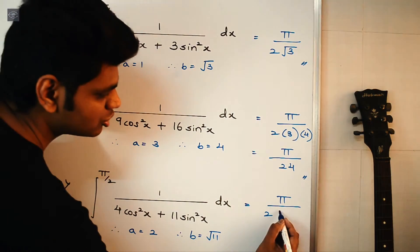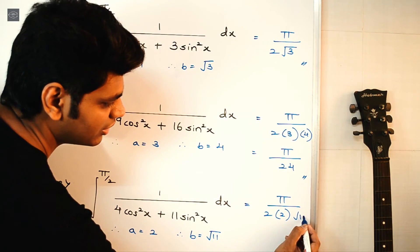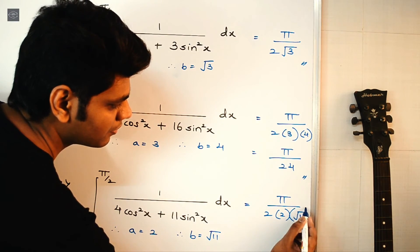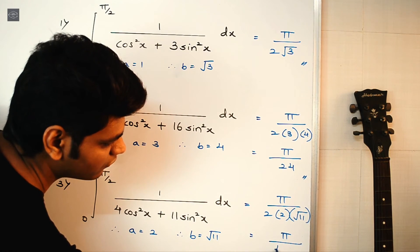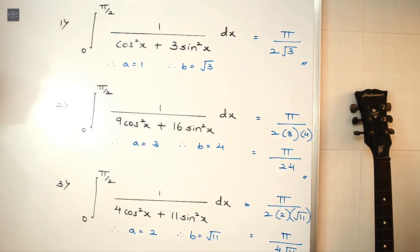So a = 2 and b = √11, which gives us π/(4√11). And that's it.